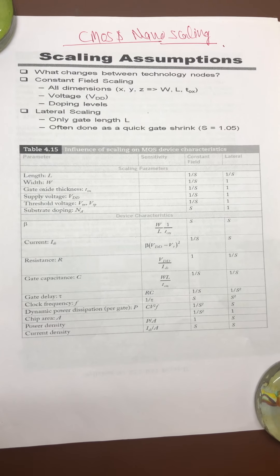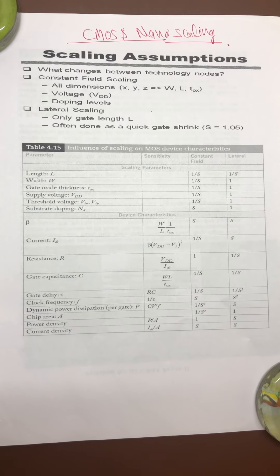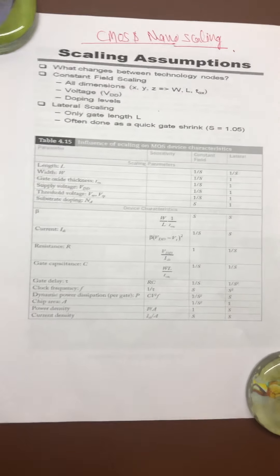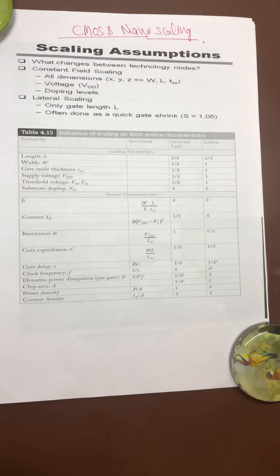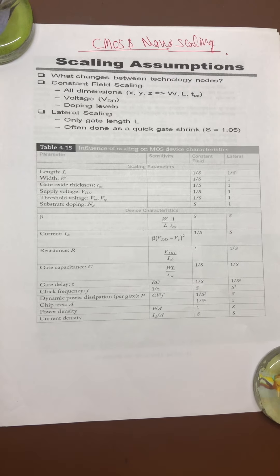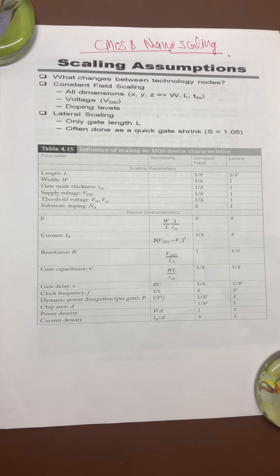Good afternoon students, today we are going to discuss CMOS and nano scaling. This is a topic which comes under third unit of nano electronics for sixth semester EC students. What we mean by scaling? Scaling is a parameter or process by which we try to make any device more compatible.